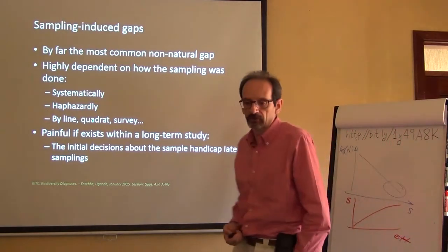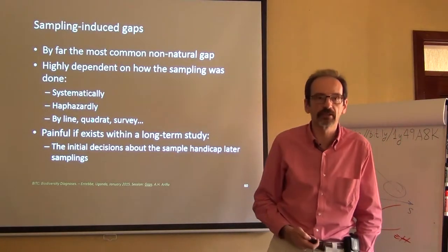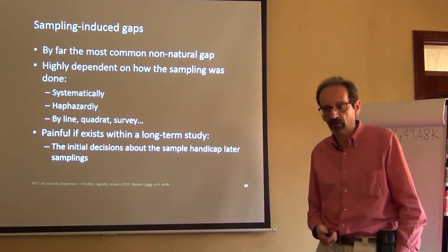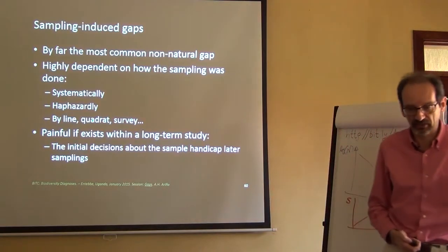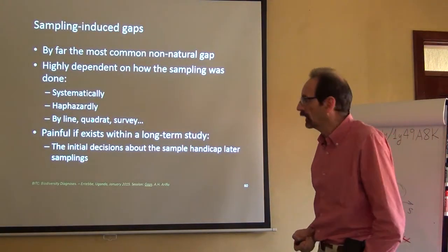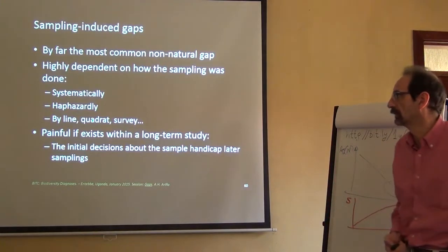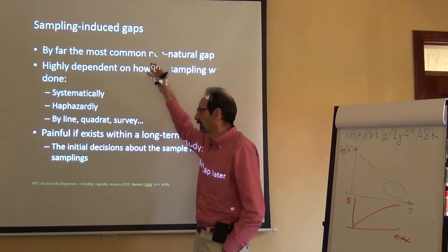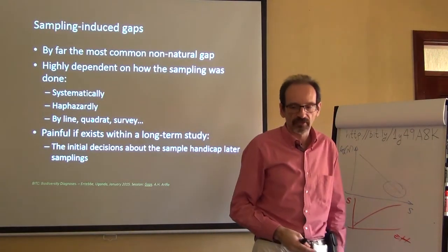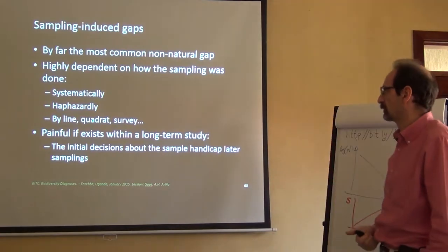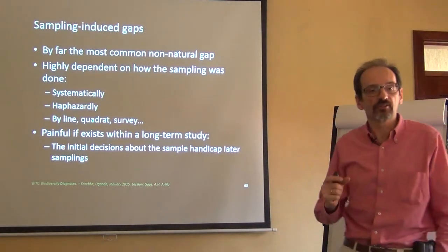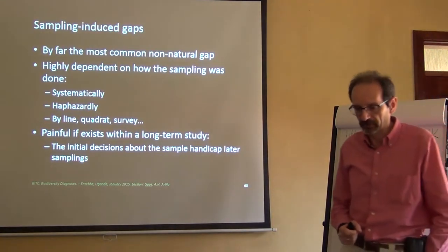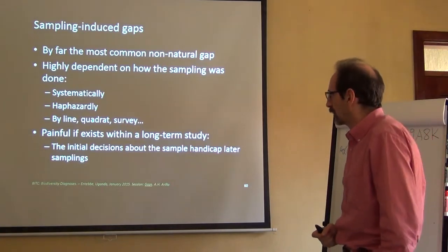By far, the most common gap that you might find is the sampling-induced gaps. I mean, gaps that are induced by the sampling techniques you're using, or the sampling constraints that we have to face. And this is highly dependent on how sampling was done. We might do systematic sampling, we might do random sampling, we might do contingency sampling, we might do line sampling, quadrat sampling.